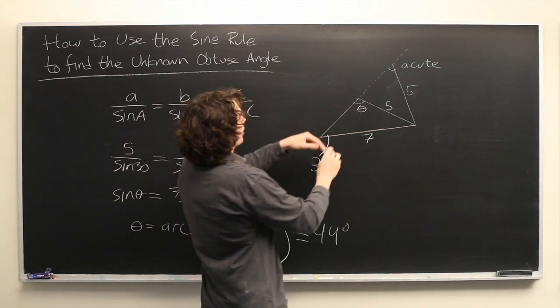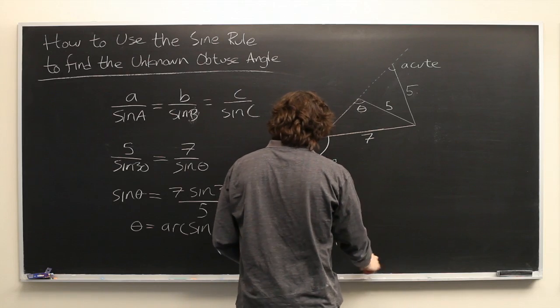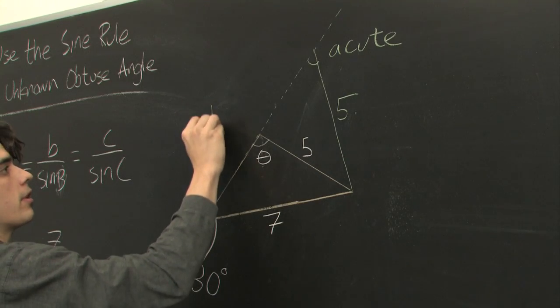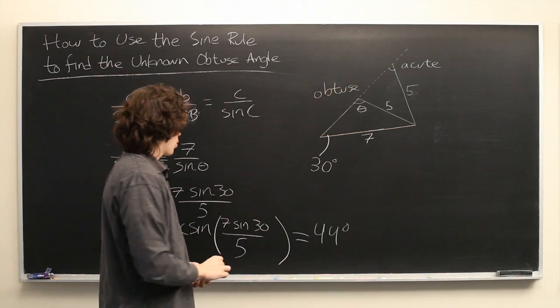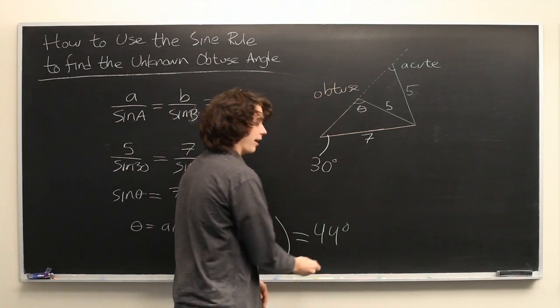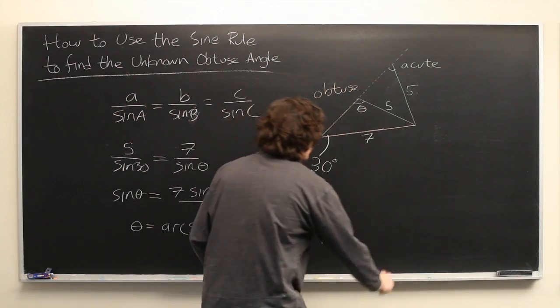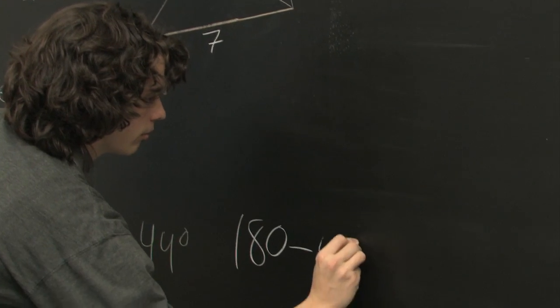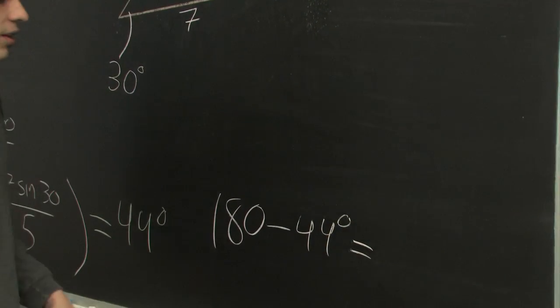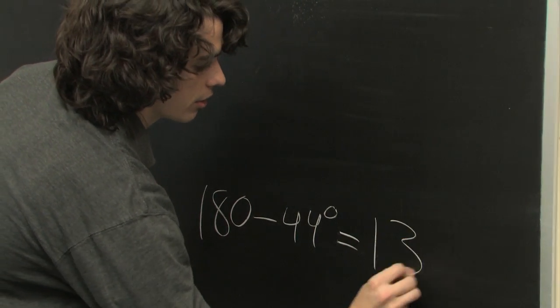But the other triangle is the one that has an obtuse angle here, which is our theta. And in order to find that, we simply need to subtract this value from 180, which gives us approximately 136 degrees for theta.